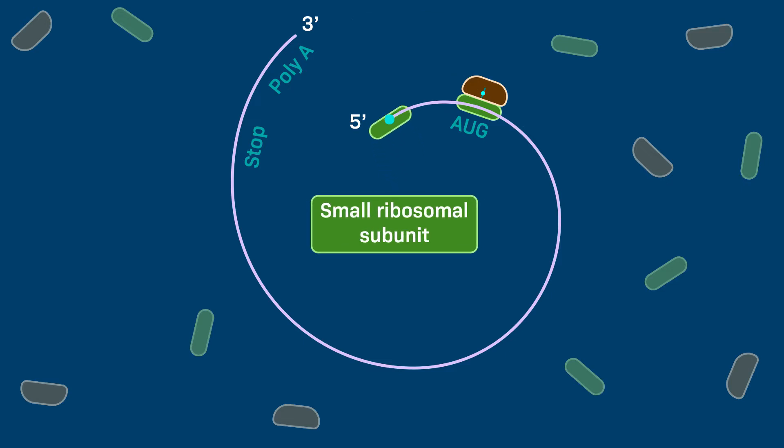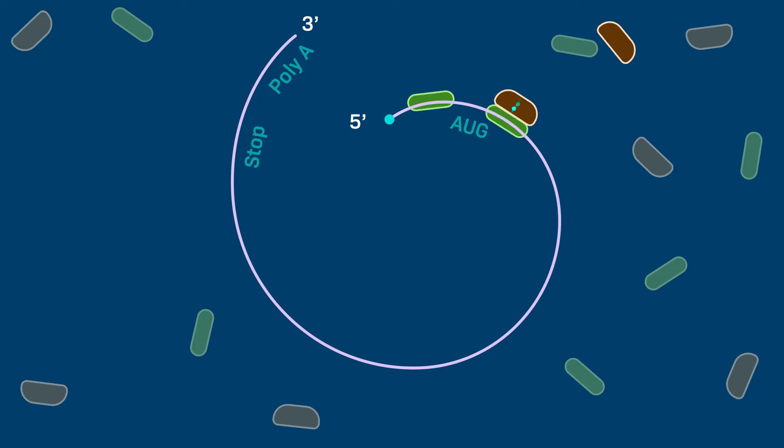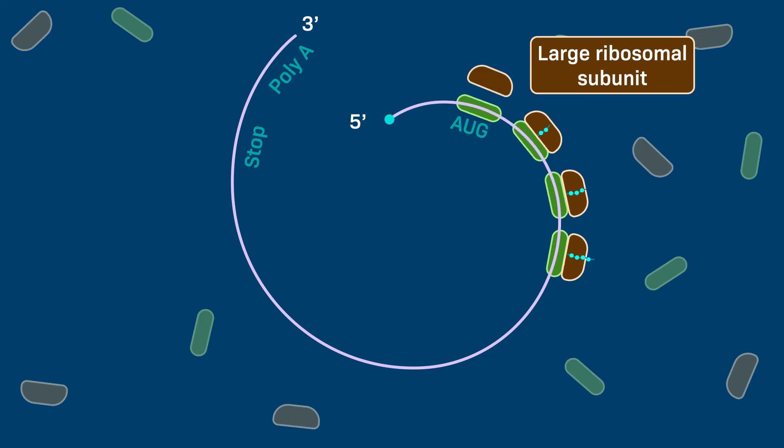The small subunit binds to the 5' cap of the mRNA molecule and then moves, or scans, downstream along the mRNA until it reaches the AUG start codon, and then the large ribosomal subunit attaches to complete the ribosome.